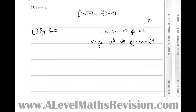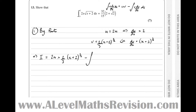Our integral now becomes, subbing into the by parts formula — which is uv minus the integral of v times du/dx dx — we get uv, which is 2x times 2 thirds (x plus 2) to the 3 over 2, minus the integral of v times du/dx. That 2 times 2 thirds gives 4 thirds (x plus 2) to the 3 over 2 dx.